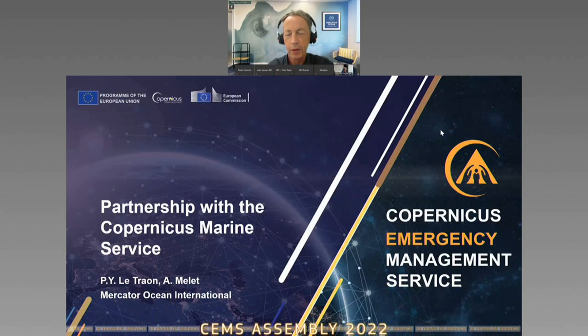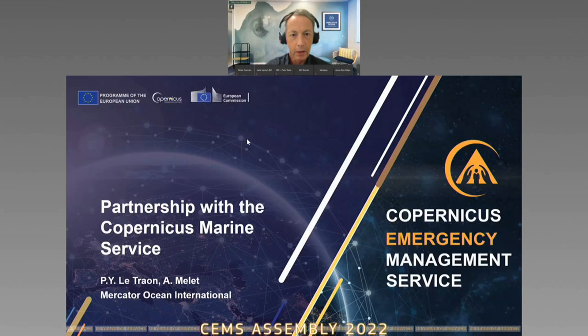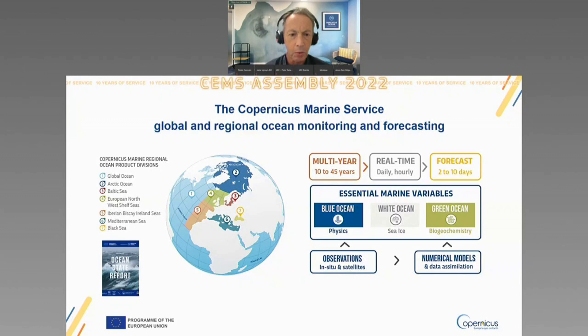Thanks for this invitation. We are very pleased to be here for this discussion on the interface links of the Emergency Management Service with the other services and the Copernicus Marine Service in particular. This is a short presentation I prepared with Angelique Meudet at Mercator Ocean International. Just to briefly remind you what Copernicus Marine Service is: we are dealing with global and regional ocean monitoring and forecasting, both for the past multi-year data sets, real-time, and short-term forecasts, dealing with all essential marine variables for physics, sea ice, and biogeochemistry, using observation and numerical models, organized together with a series of producers in Europe.